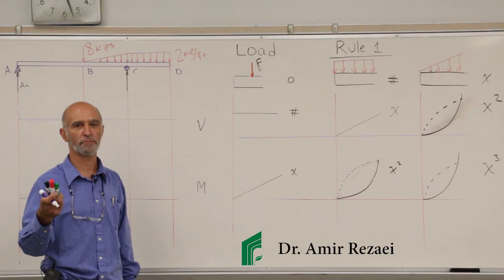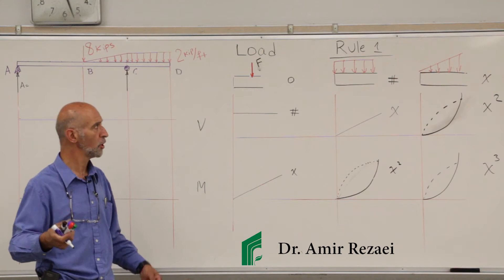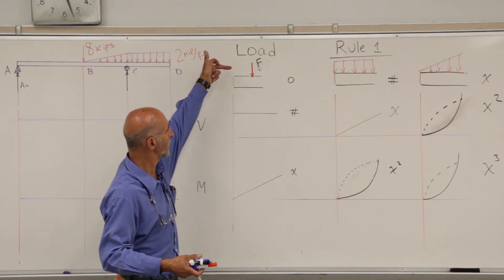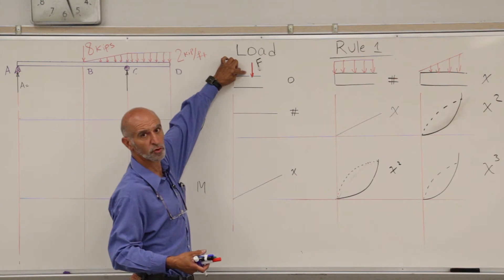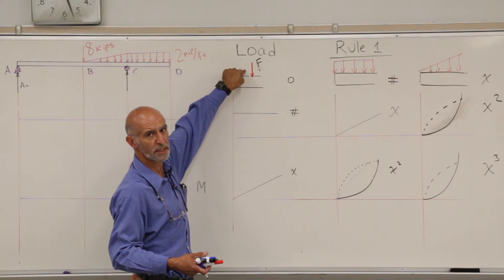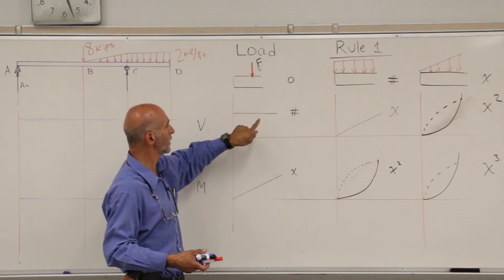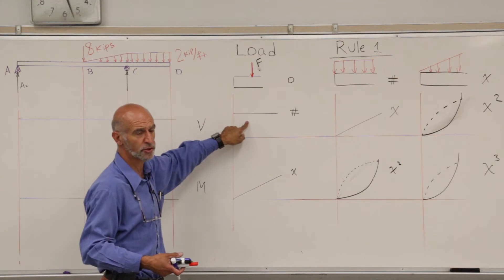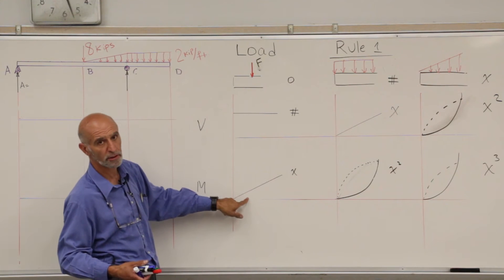Rules of drawing shear and moment diagrams for beams. Rule number one says that if the load on the beam is a point load, which has an order of zero, it will have a constant shear and a linear moment.